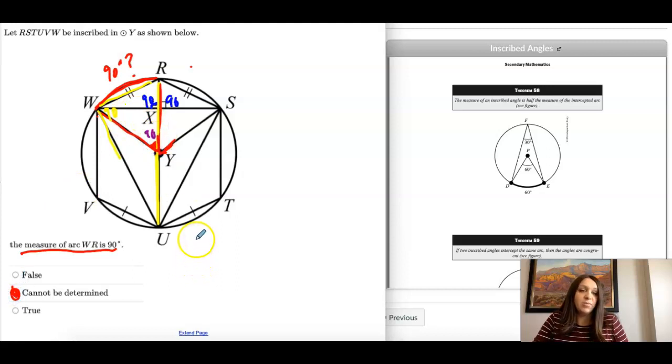We don't know what that angle is. It doesn't look like 90, but it might not be to scale. You know, that's 90 and that's 90. So I can't have two 90-degree angles, so we actually can tell that this would be false. Okay, because we can't have two 90-degree angles in a triangle. Then it wouldn't be a triangle.